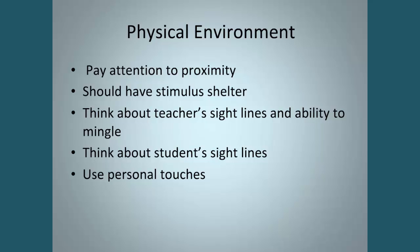We talked a bit about teacher sight lines and ability to mingle. Also about student sight lines, so they can see you and the visuals that you're talking about — because visuals are so important. So if you're holding up a piece of paper and saying everybody should be on this page, make sure everyone can see it. Also use personal touches. Personal touches make children with autism connect things with the teacher, help them learn what to talk about, and make them feel more at home. It really, really does make a difference.